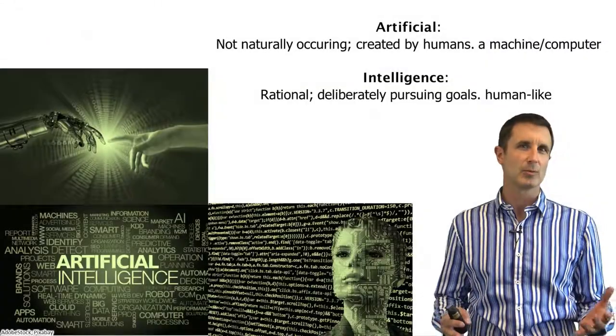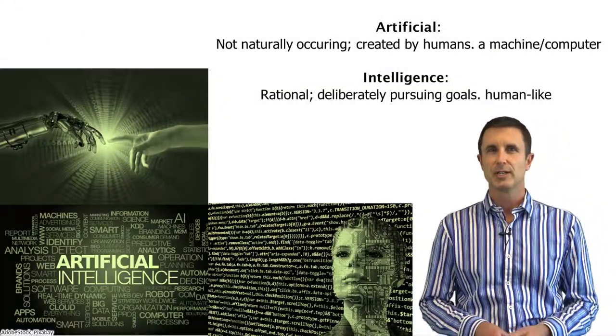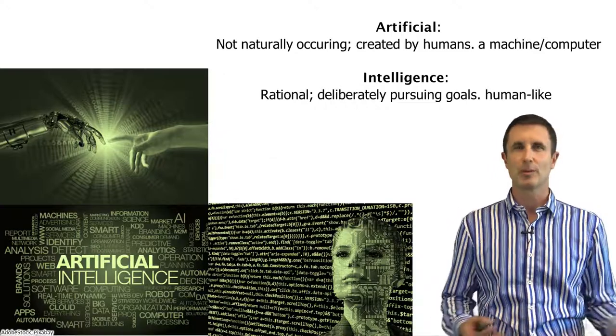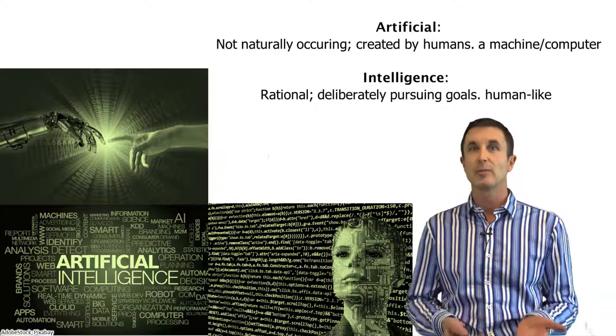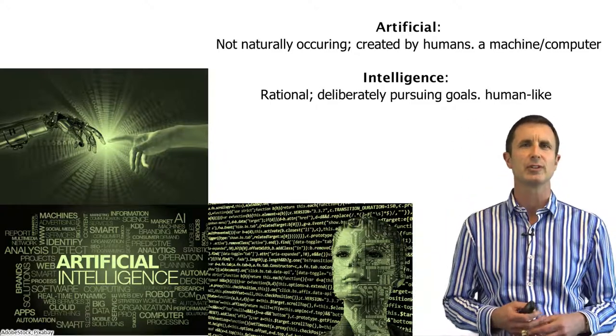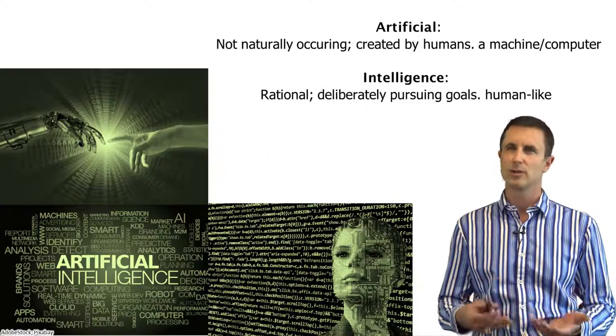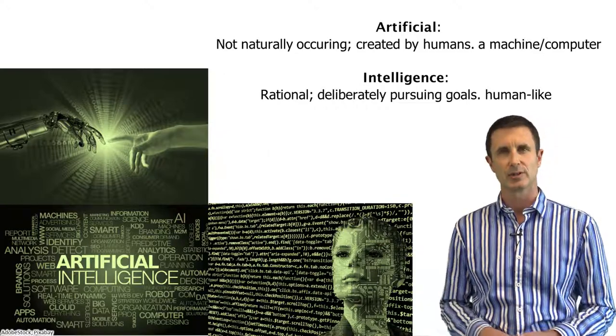So I think the first place to start would be what is artificial intelligence? Two words: artificial and intelligent. Artificial means something that's not naturally occurring, something that's created by humans. So typically in artificial intelligence, we're talking about a machine or a computer. You could imagine re-engineering biological systems, but generally we're considering computers.